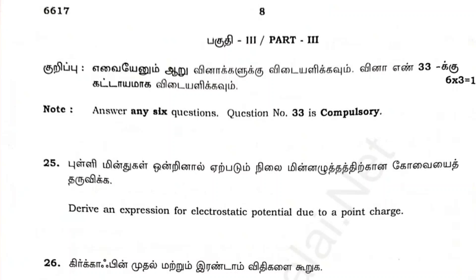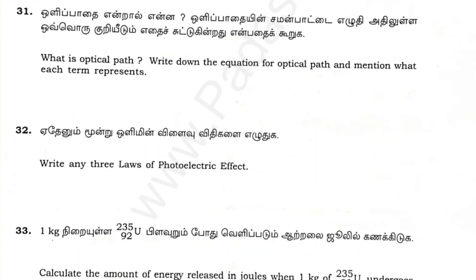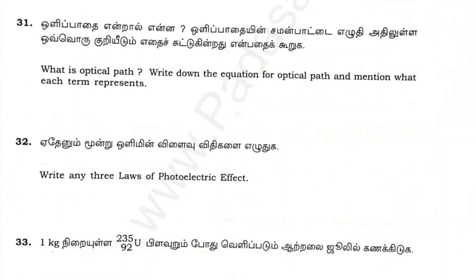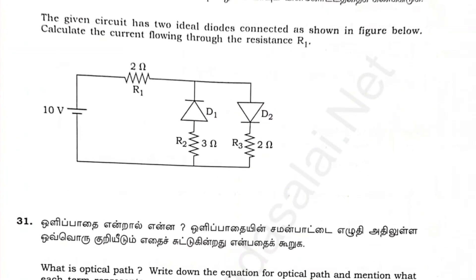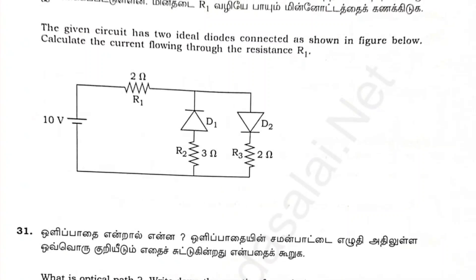The first is compulsory. Calculate the amount of energy released in joules when 1 kg of ²³⁵₉₂U undergoes fission reaction. This is the sum stamp — question 22. Write any 3 laws of the photoelectric effect. What is optical path? Write down the equation for optical path and mention what each term represents.